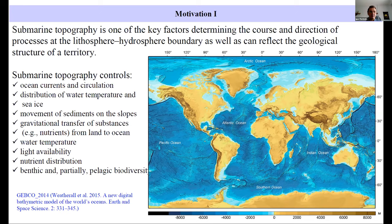Water temperature, light availability, nutrient distribution, and so benthic and partially pelagic biodiversity.